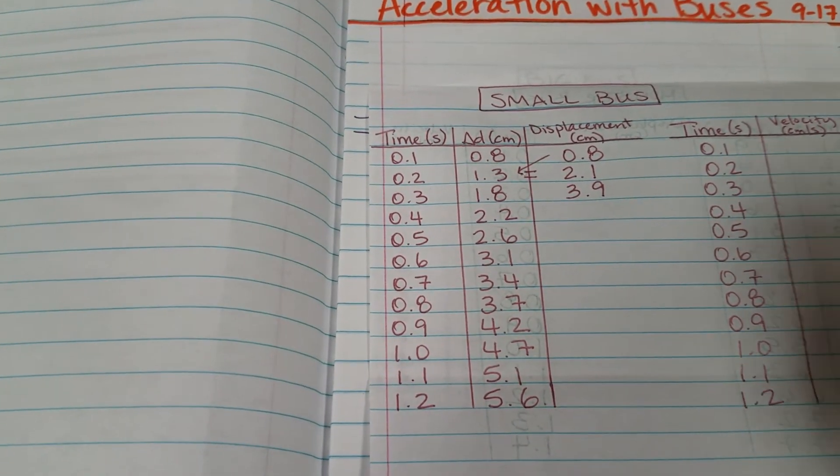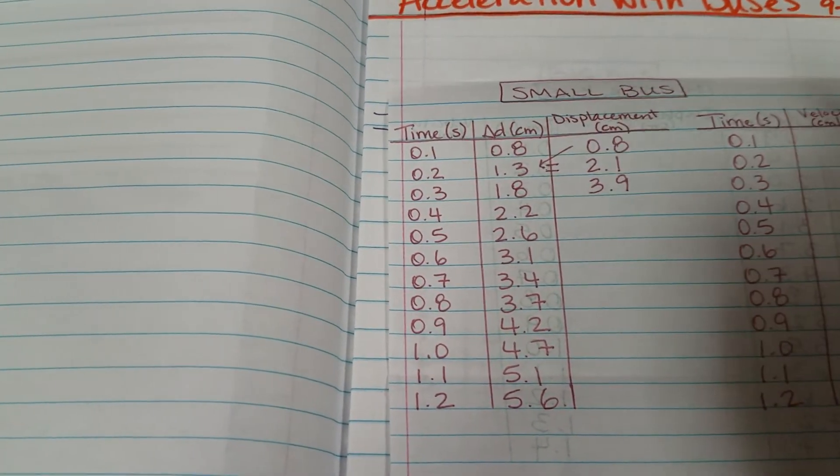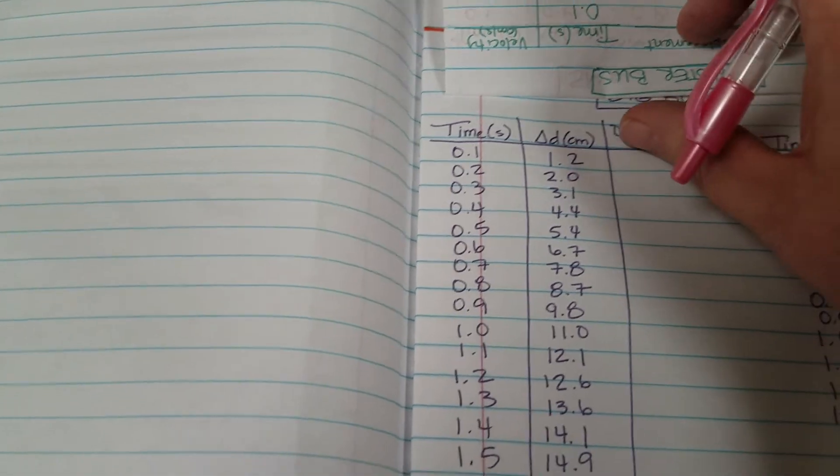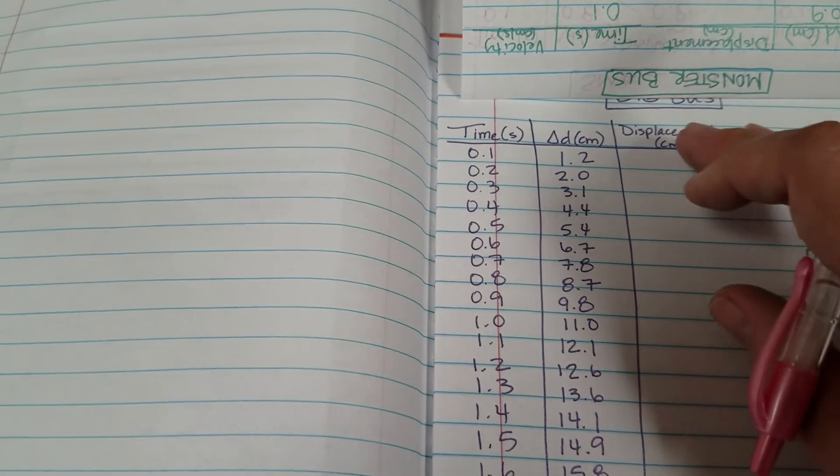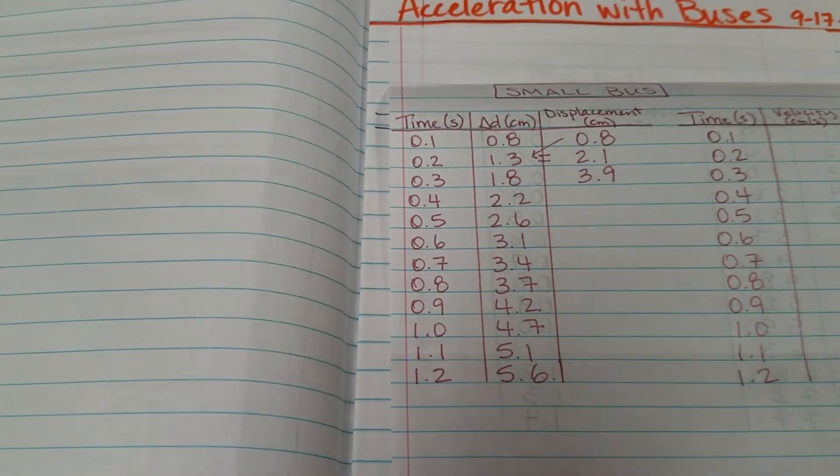Make sure you do that for all three charts. The small bus, the monster bus, and the big bus. You should have all of the displacement columns filled in before you do anything else.